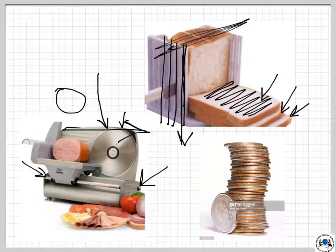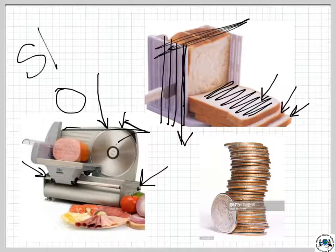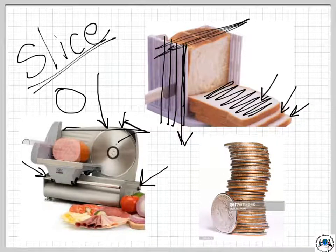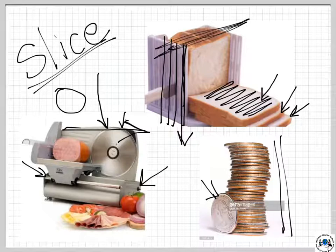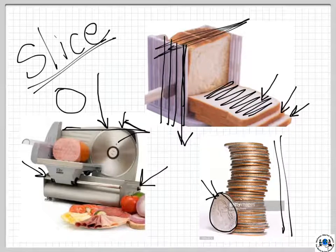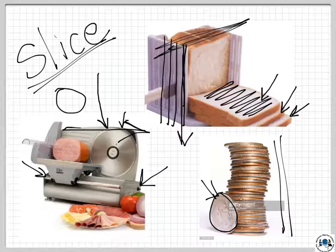There are non-food examples too. Think of a stack of quarters — one quarter is a slice of that stack. Similarly, a deck of playing cards: take one card out and it's a slice of the entire deck. These examples help us narrow down what we mean by 'slice' in geometry.